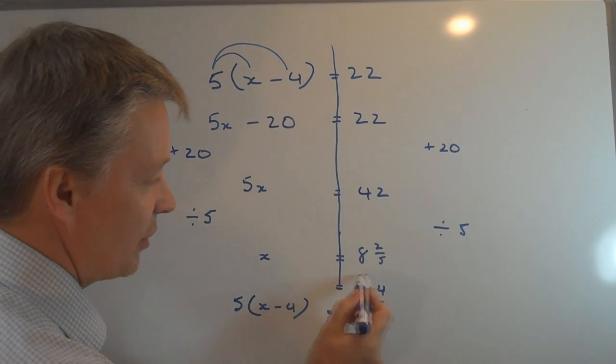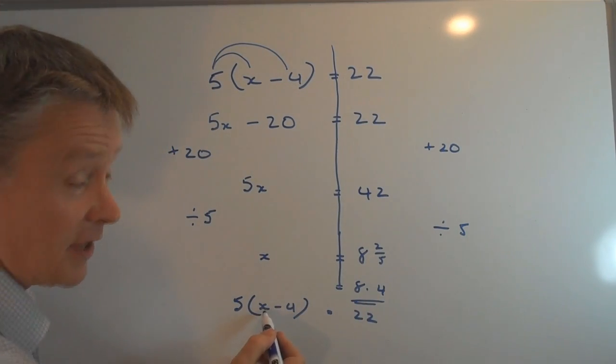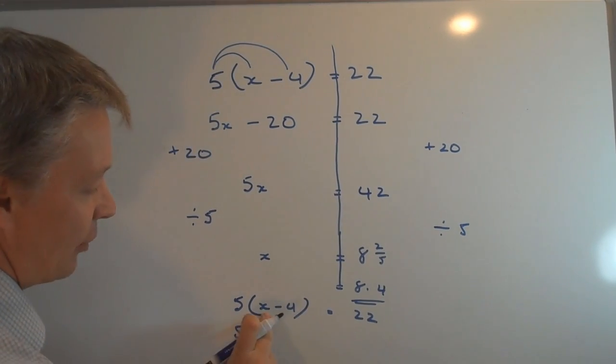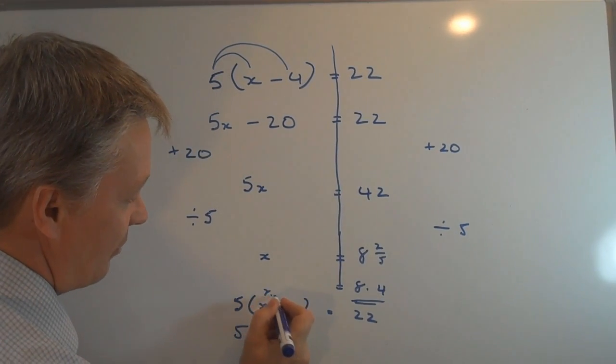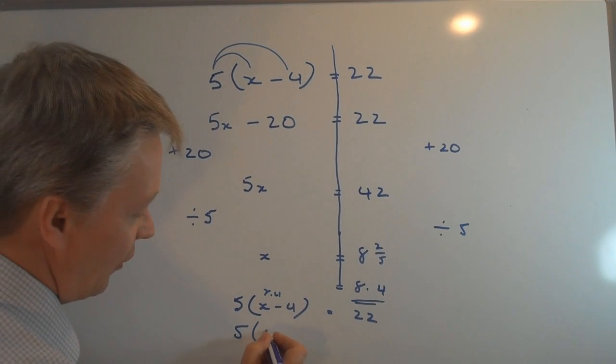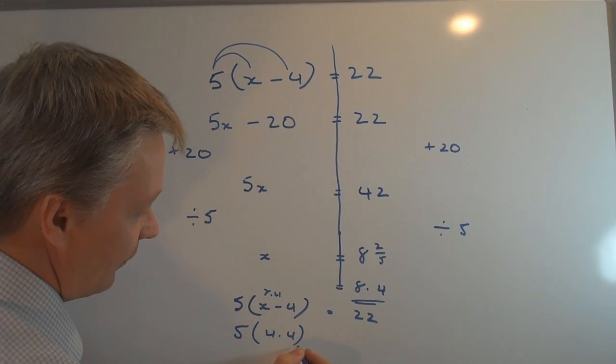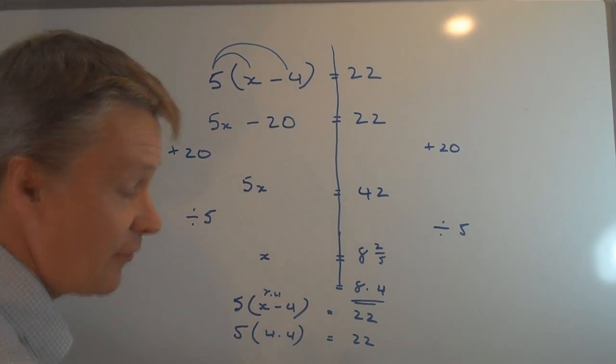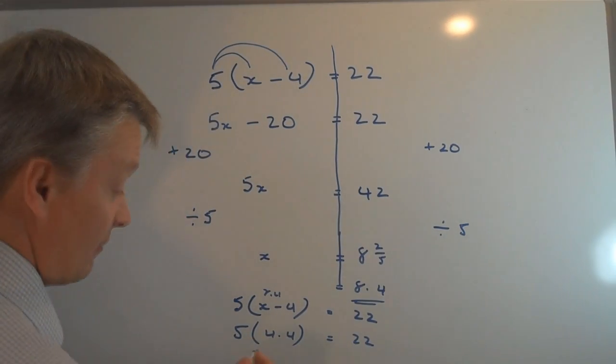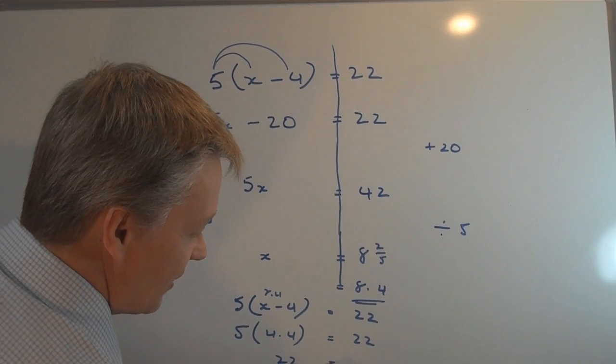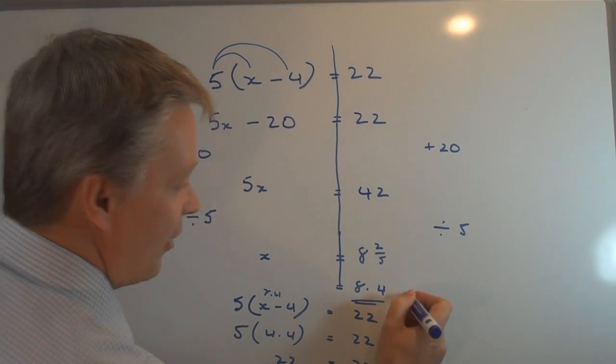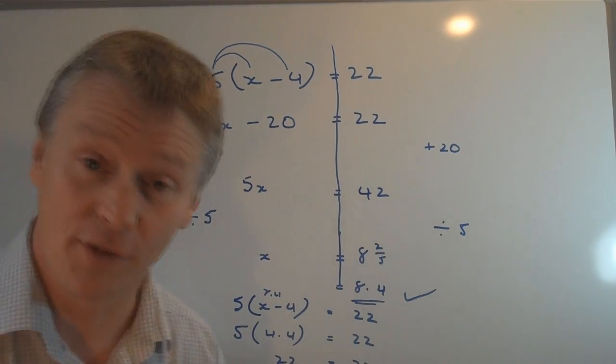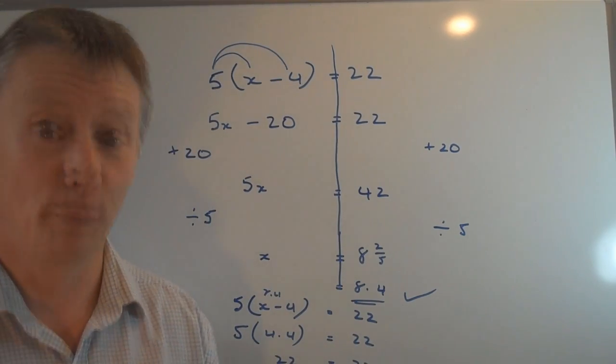So I'll just write that out. So it will be 5(x minus 4) equals 22, and all I'm doing is I'm just going to check by putting this value of 8.4 into here. So I have 5 and 8.4, so this will be 8.4 minus 4 is 4.4 equals 22. Well, 5 times 4.4 is 22, so 22 equals 22. So my answer of 8.4 or 8 and 2 fifths, if you prefer to use fractions, would be correct.